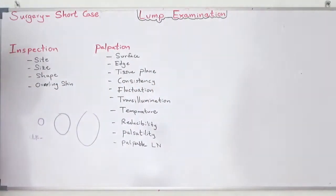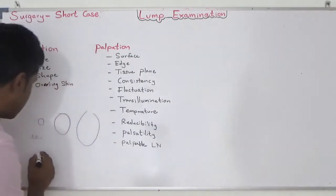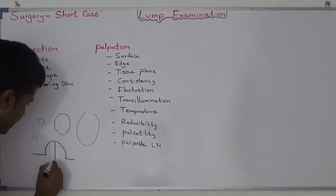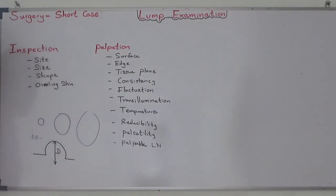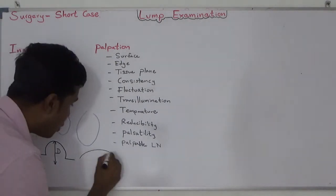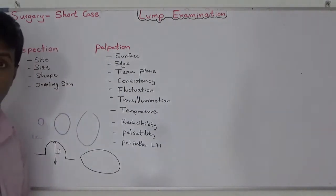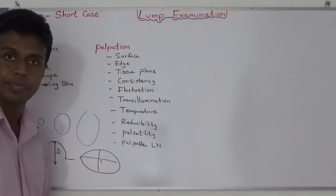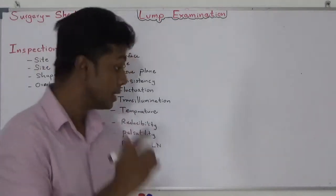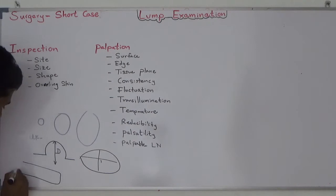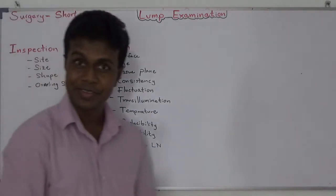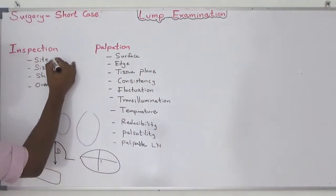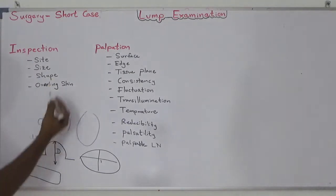Third: shape. Some lumps are hemispherical - in that case you only need to tell the diameter. Some lumps are oval in shape - then you have to tell both lengths. Some lumps are sausage-shaped, especially in direct inguinal hernia. So you have to tell both the size and the shape.